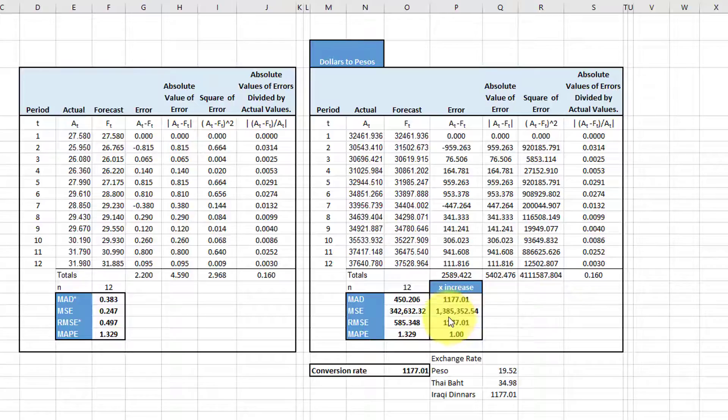The MSE up to 1.385 million times as large as the original value for the mean square. And the others, of course, are over a thousand times as large. Just to underscore again that when you're dealing with forecasts with different units, particularly if they're scale that much different, use the MAPE to compare those forecasts.